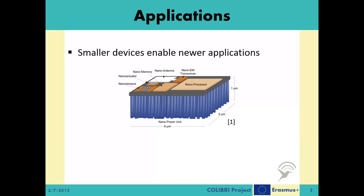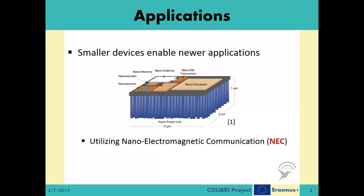As we described in the previous video, with the advent of newer, smaller devices that can communicate in the nanoscale, there will be novel applications for these kinds of machines. Because of their smaller sizes compared to the current generation of devices, they will be able to work in places where the current devices are either unable to work or work very inefficiently. We differentiate these applications into two groups based on the underlying selected nanonetworking approach: applications utilizing nano-electromagnetic communication, in short NEC, and applications utilizing molecular communication, MC. The NEC applications generally deal with outside-of-living organism environments, while MC applications mostly deal with inside-of-living organism environments.